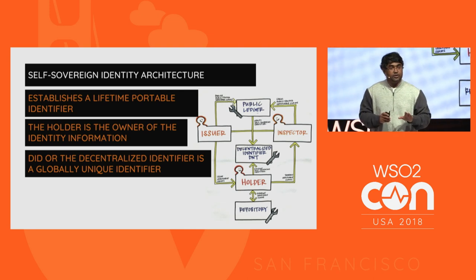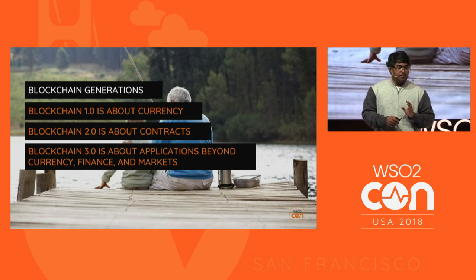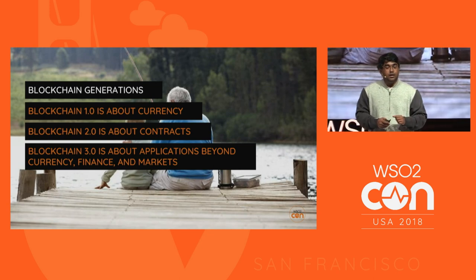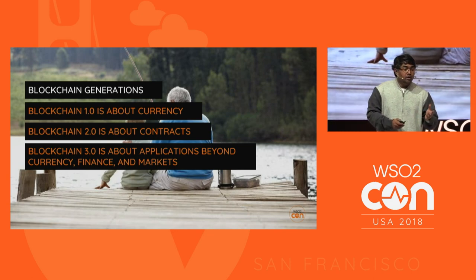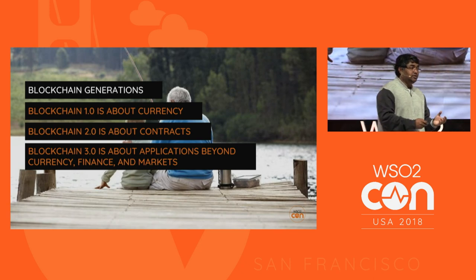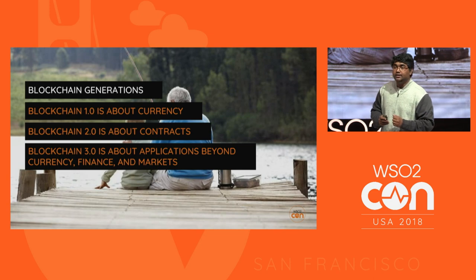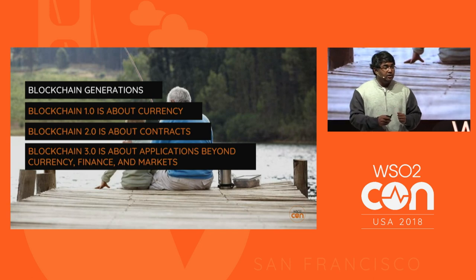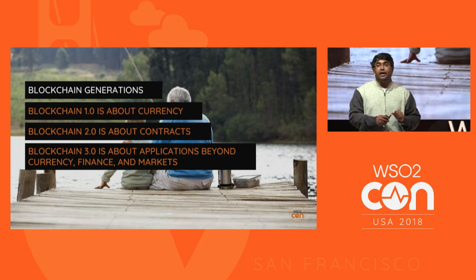This is a high-level overview of self-sovereign identity — and it is an evolving architecture. We see three generations in blockchain: Blockchain 1.0 is about currency — Bitcoin falls under 1.0. Blockchain 2.0 is about contracts — Ethereum falls under 2.0. Blockchain 3.0 is about applications beyond currency, finance, and markets. Most applications developed to support self-sovereign identity fall under generation 3. The Sovrin Ledger, a blockchain implementation under the Sovrin Foundation, falls under Blockchain 3.0 and tries to build a global network to support this self-sovereign identity model.